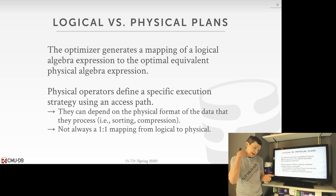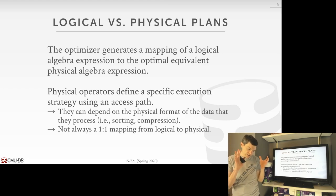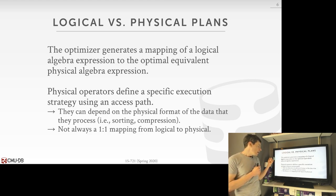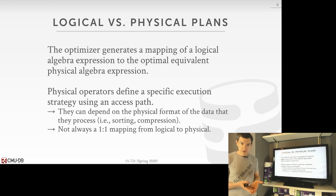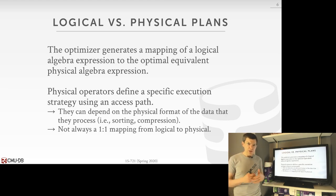The optimizer is trying to map a logical algebra expression of the query into an equivalent physical algebra expression. The logical plan says 'I want to access table foo.' The physical plan says 'access table foo using index X, Y, Z' or 'using a sequential scan' or 'binary search on the actual table.' The physical plan tells you how you actually want to execute the query; the logical plan says what you want the query result to be.